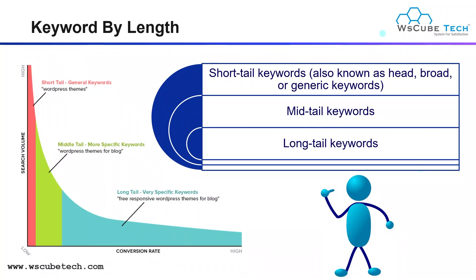Next we have keywords by length. We can judge keywords on the basis of their length. If you have only one or two word keywords, those are known as generic keywords or short tail keywords. For example, 'WordPress themes' is a generic keyword. The user's intention behind such a keyword may be just to gather information, so there is a very high search volume for it.